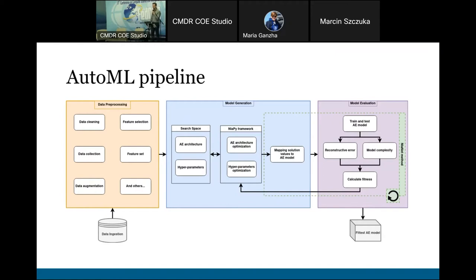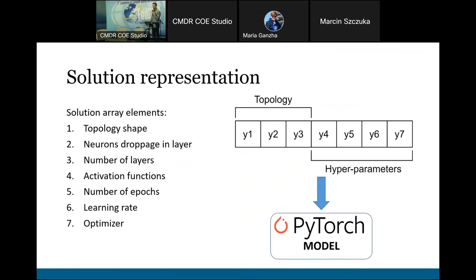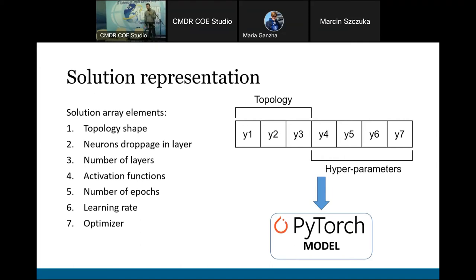This iterated process tries to run until we get the appropriate solution. The solution is a one-dimensional array with seven elements — the first three representing the topology: topology shape (asymmetric or symmetrical), neuron drop per layer (how many fewer neurons per layer from the initial layer), and number of layers in the encoder and decoder. The last four elements represent hyperparameters: activation function, number of epochs, learning rate, and optimizer. Once we get this array of values, we map it to a PyTorch model.